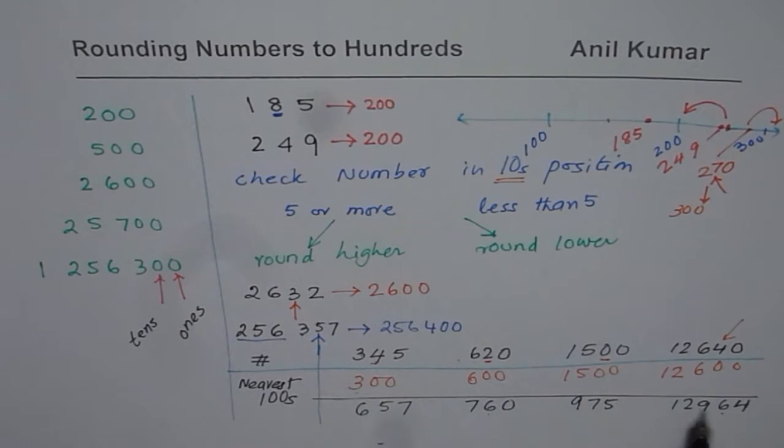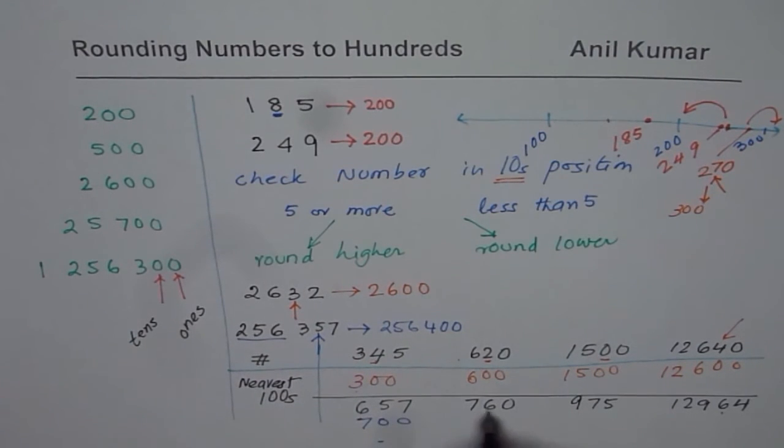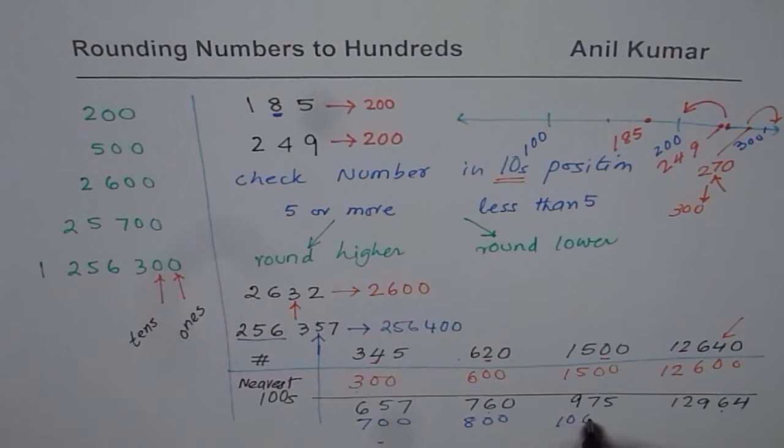6 is more than 5. So they round higher. These are tricky ones. One higher means this will be zero, one carry forward, 13,000. Here this will be 1,000. So let me write down the answers. This will be higher, 700. Higher, 800. Higher, 1,000. Higher, 13,000.